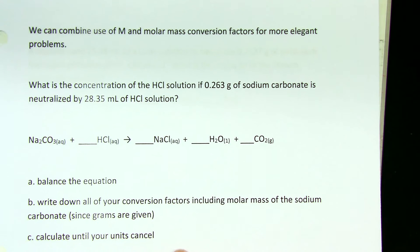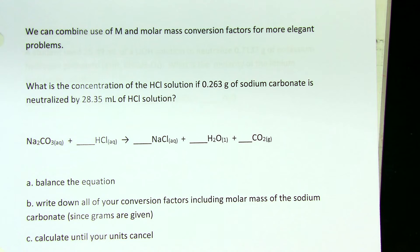Now let's look at one that's a little bit fancier. This one combines molarity as a conversion factor and molar mass because we're given information about grams of one thing and milliliters of another. We've already done lots of stoichiometry where we did grams to moles, moles to moles, moles to grams.